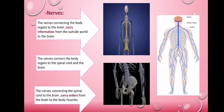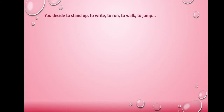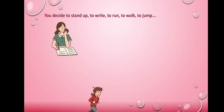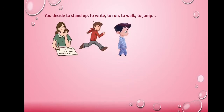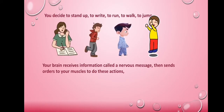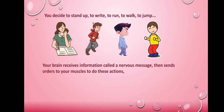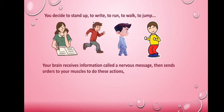Let's see how this happens. You decide to stand up, to ride, to run, to walk, to jump. Your brain receives information called a nervous message, then sends orders to your muscles to do these actions.